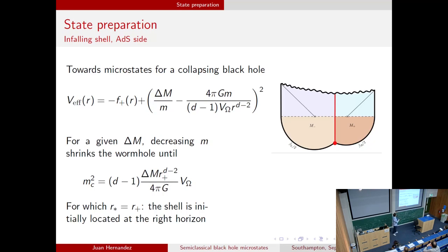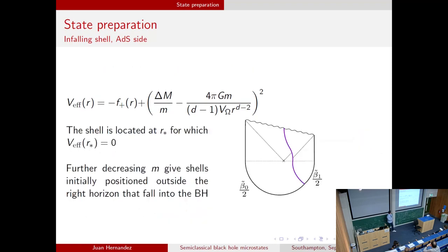Because we have two different Euclidean time evolutions, the geometries on either side can have different masses — black holes of different mass. If you keep the difference in masses fixed and decrease the mass of the shell inside the wormhole, the wormhole starts shrinking until at some critical mass it reaches one of the two horizons. If we keep decreasing the mass, we end up with a double-sided black hole where on one side there's a spherical distribution of matter which upon Lorentzian time evolution falls into the black hole and increases its mass by delta m. These are the states I'll be considering.